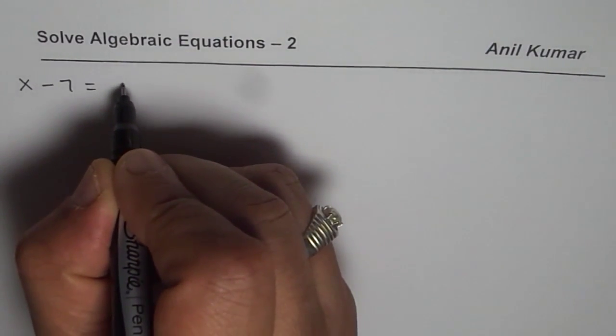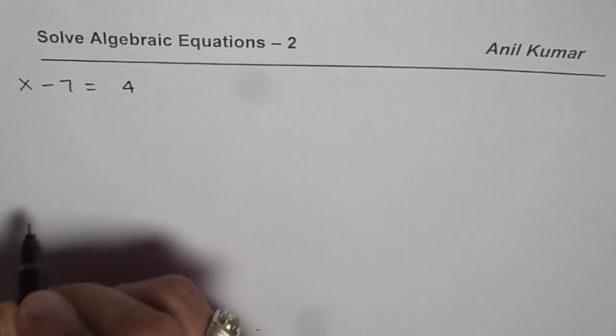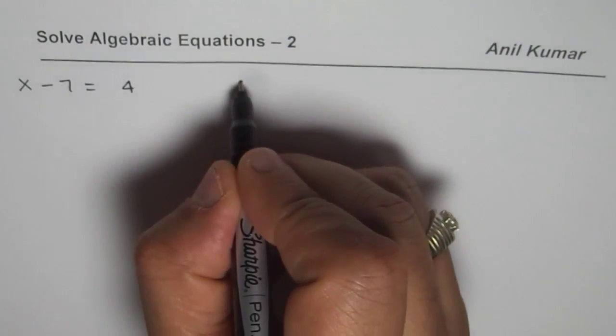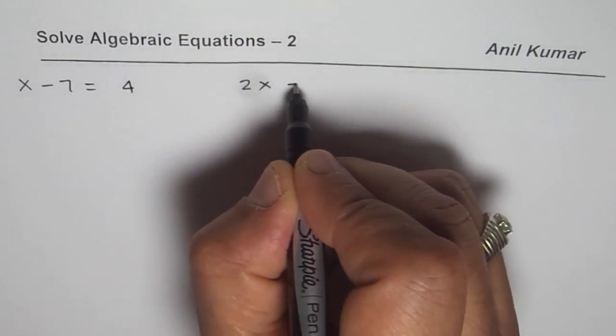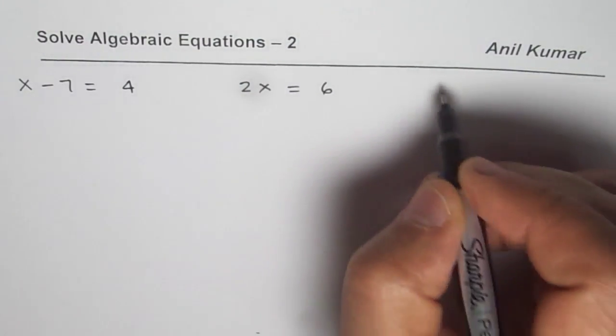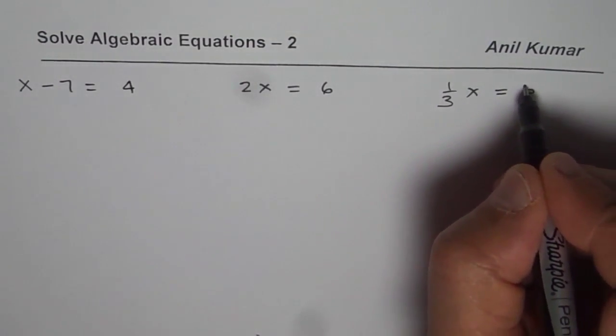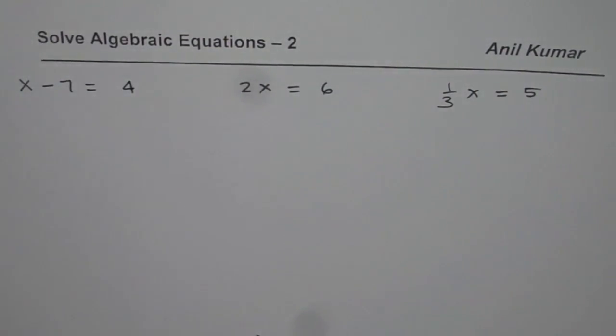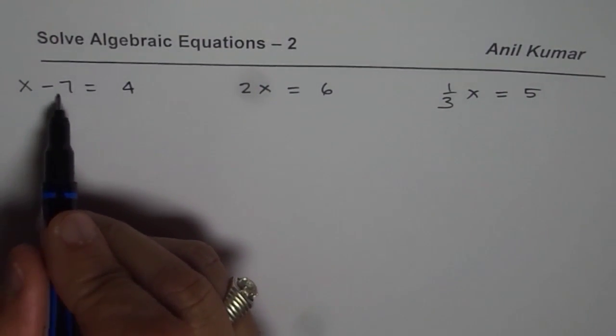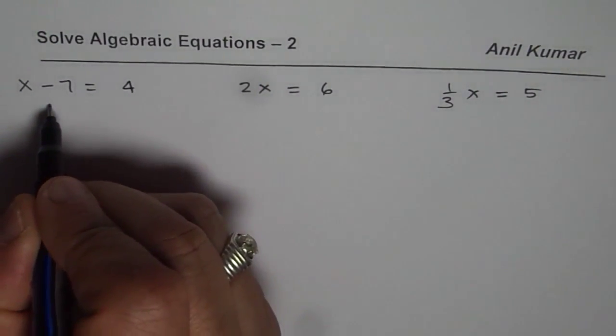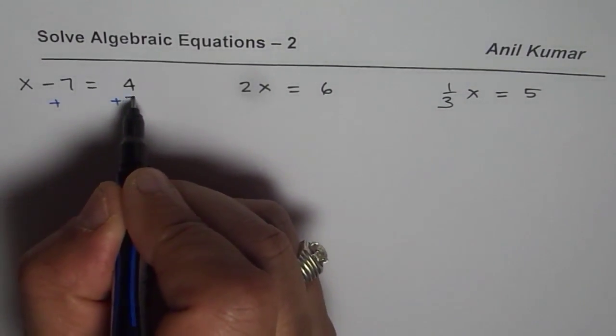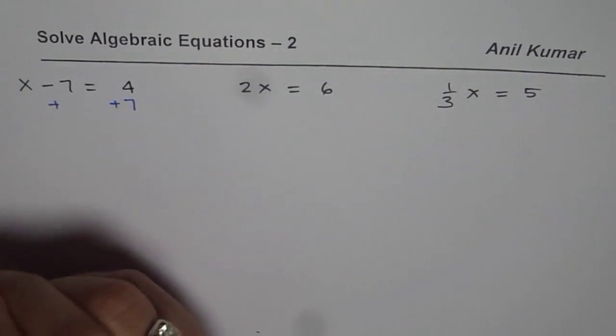minus 7 equals 4 and we also learned how to solve equations like 2x equals 6 or one third of x equals, let's say, 5. Now to solve this equation x minus 7 equals 4 we could add 7 on both sides and solve for x so what